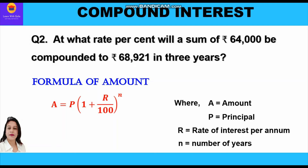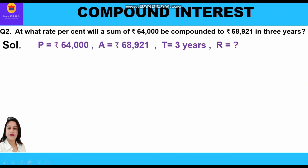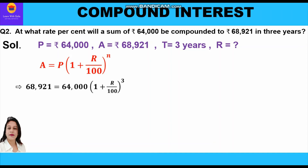Three quantities are given and we have to find the fourth. Principal is rupees 64,000, amount is rupees 68,921, time period is 3 years, and we need to find the rate of interest. Applying the formula: 68,921 is equal to 64,000 into 1 plus r upon 100, whole raise to power 3 because time period is 3. Cross multiplying: 68,921 upon 64,000 is equal to 1 plus r upon 100 whole cube.